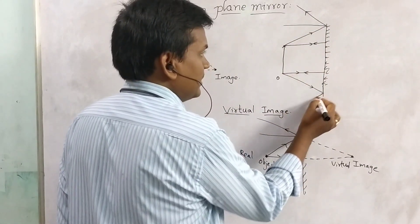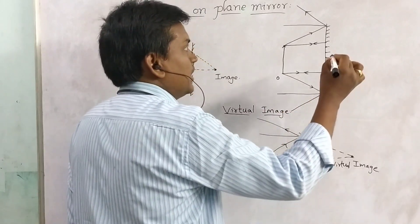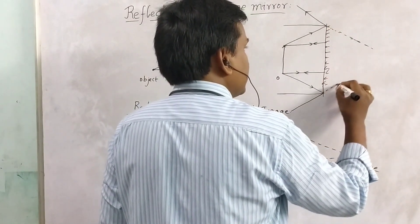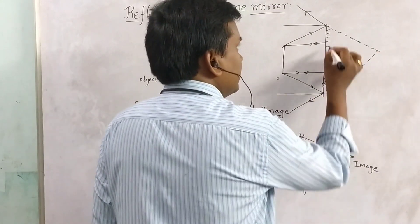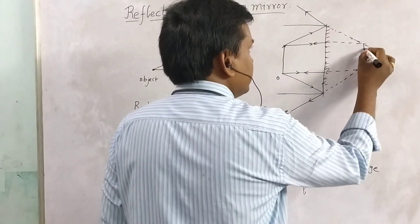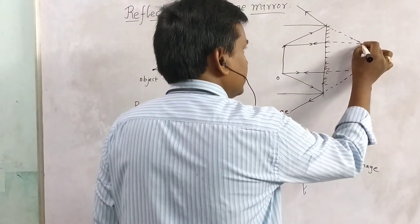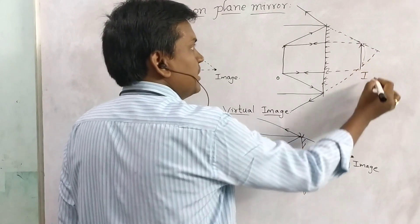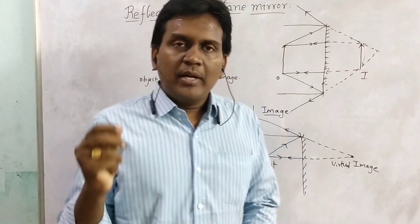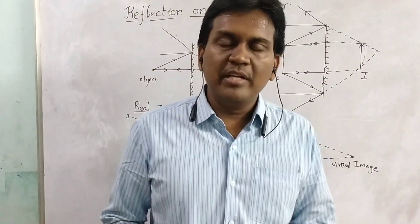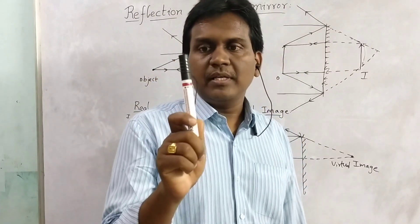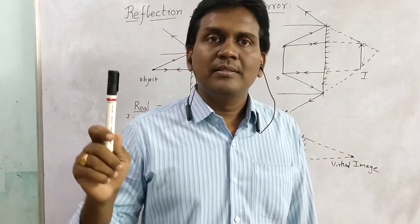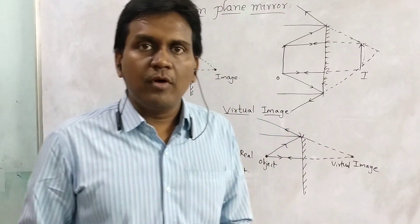If we extend the reflected rays, they will meet at a point where the image will form. So this is a line object and this is a line image. For a plane mirror, the first characteristic is that the image will be erect — whatever object we place, the same erect image is traced in the mirror with the same color, same size, and same shape.